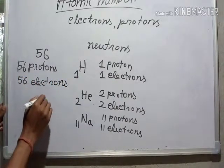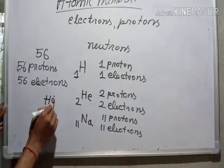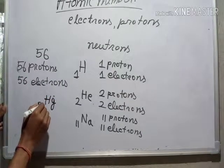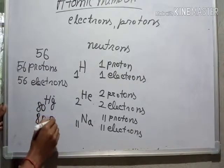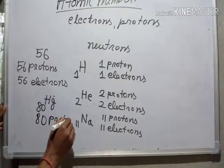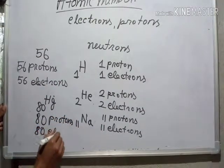If you consider element number 80, that is mercury, which has atomic number 80, so it will have 80 protons and 80 electrons.